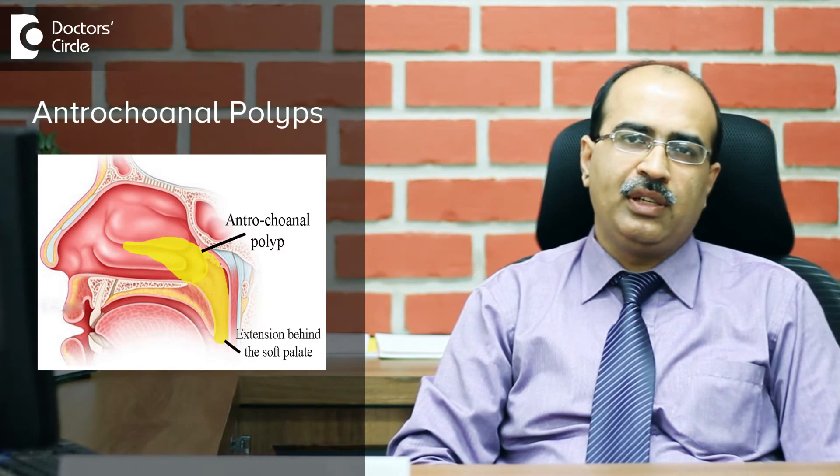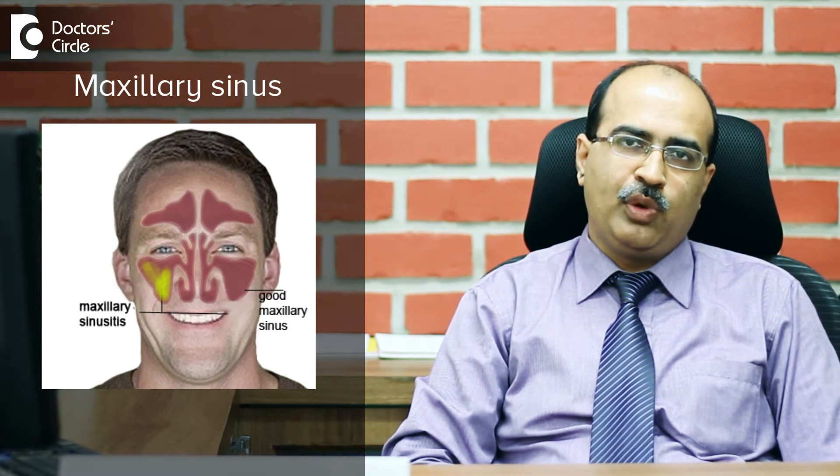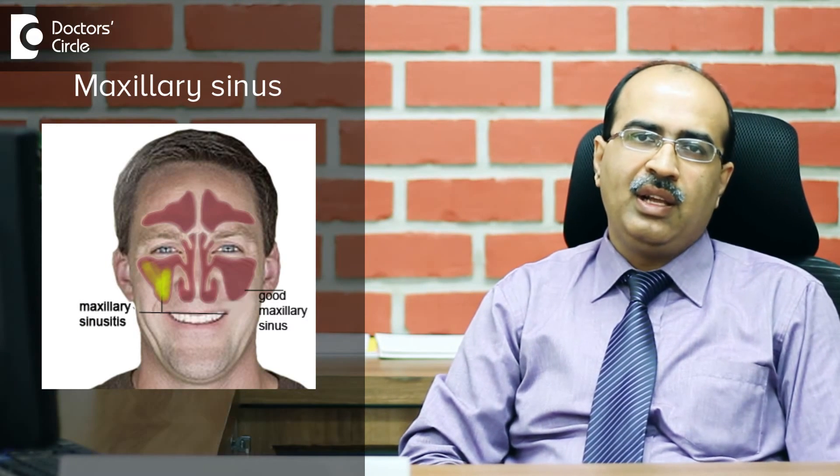There is also another entity called an antrochoanal polyp, which takes origin from the maxillary sinus — the sinus situated below the eye. This polyp starts growing into the nose and can grow behind into the back portion of the nose and actually fall into the oral cavity. This is called an antrochoanal polyp, and it is supposedly secondary to repeated infections.